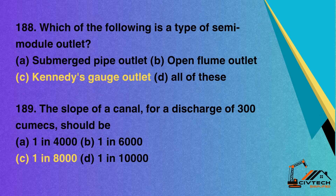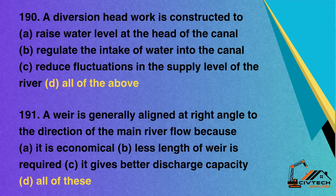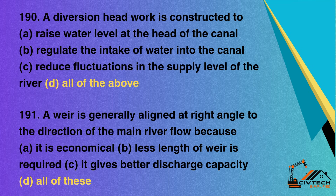Question 189: The slope of a canal for a discharge of 300 cubic meters per second should be — A. One in 4,000; B. One in 5,000; C. One in 8,000; D. One in 10,000. Correct option: C. One in 8,000. Question 190: A diversion headwork is constructed to — A. Raise water level at the head of the canal; B. Regulate the intake of water into the canal; C. Reduce fluctuations in the supply level of the river; D. All of the above. Correct option: D. All of the above. Question 191: A weir is generally aligned at right angle to the direction of the main river flow because — A. It is economical; B. Less length of weir is required; C. It gives better discharge capacity; D. All of these. Correct option: D. All of these.